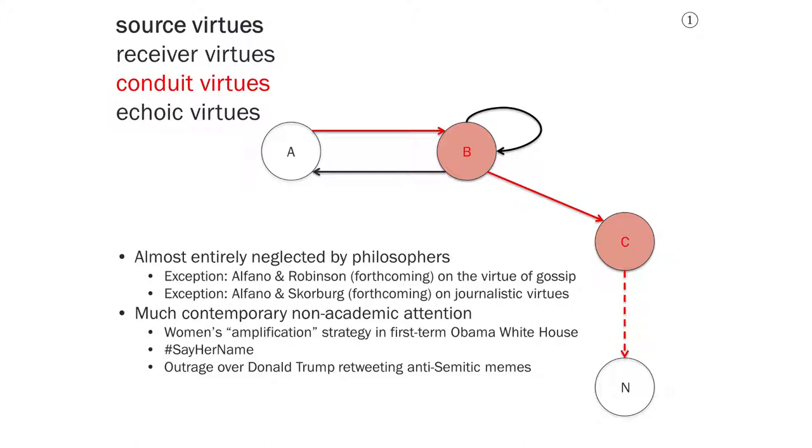Much contemporary non-academic attention, however, has been paid to conduit virtues. So, for instance, there was an article recently in the news about a strategy that some women used in the first term of the Obama White House that they called amplification. What this meant was whenever a woman made a point in an important meeting, another woman would repeat it and refer it back to the first person who spoke. They did this because they found that unless they amplified, they would be spoken over by the men at the meetings, and sometimes the men would even take credit for the women's contributions claiming them as their own. So conduit virtues have to do not just with repeating what someone said, but also with giving them credit for it when one does repeat what they said.